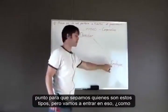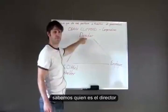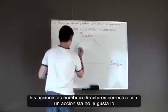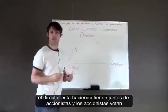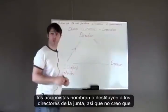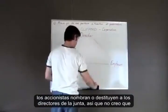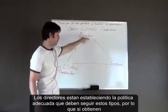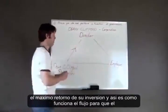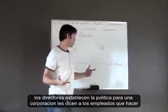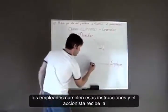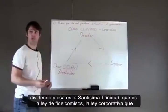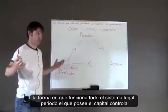We know who these roles are. Shareholders appoint directors. If a shareholder doesn't like what a director is doing, they have shareholders meetings and vote to appoint or remove directors from the board. The shareholder appoints a director to make sure the directors set the proper policy for employees to follow, to get the maximum return on their investment. Directors set policy, tell employees what to do, employees carry out instructions, and the shareholder receives the dividend. That's the holy trinity — trust law, corporate law. That's the way the entire legal system works. He who owns the equity controls, period.